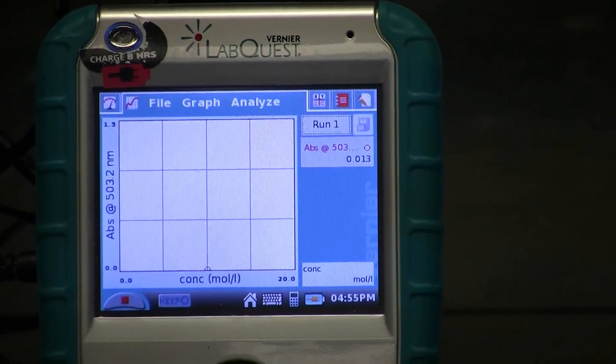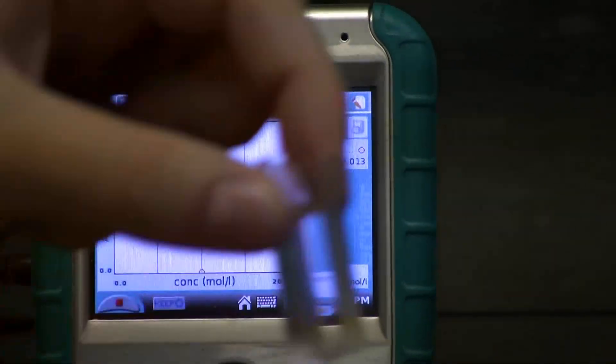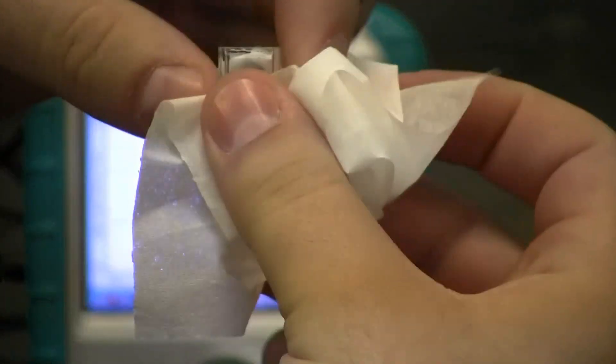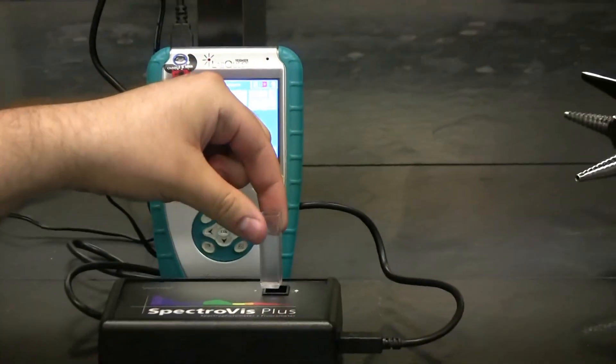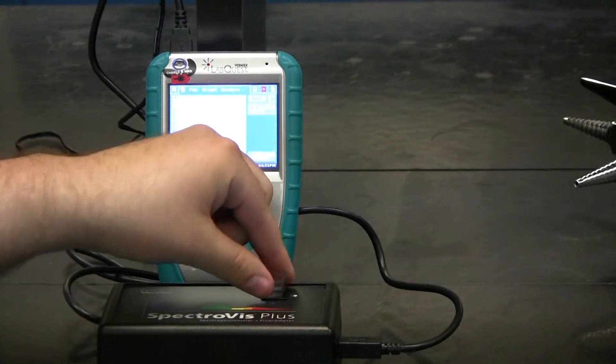You are now ready to take your serial dilution cuvettes, wipe them off one by one with Kim Wipes, and place them one by one into the SpectroVis Plus.